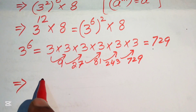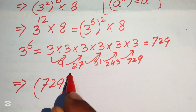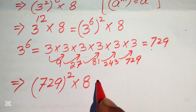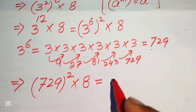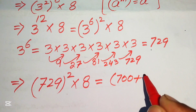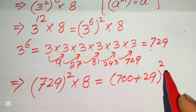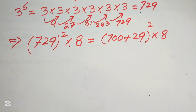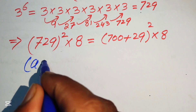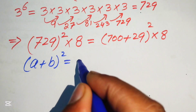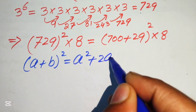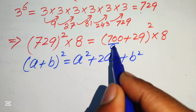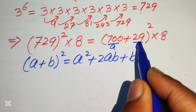We replace 3 to the power of 6 with 729, so the expression becomes 729 squared, multiplied by 8. We focus on the base 729 and write it as 700 plus 29, whole squared, multiplied by 8. We need the algebraic formula: a plus b whole squared equals a squared plus 2ab plus b squared. Here a equals 700 and b equals 29.